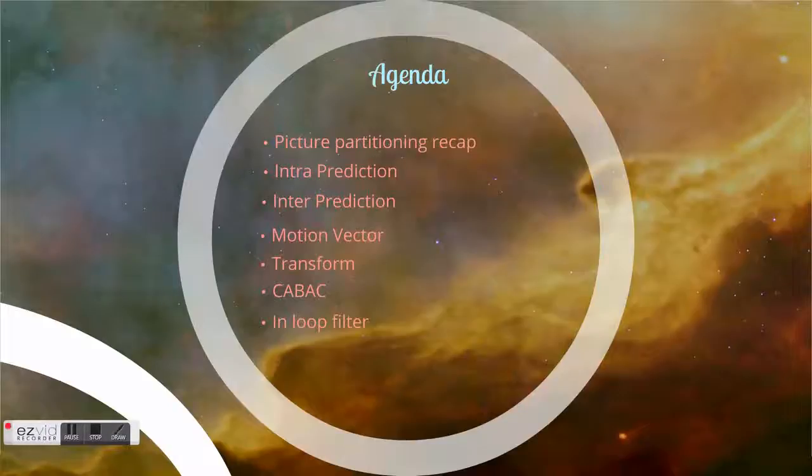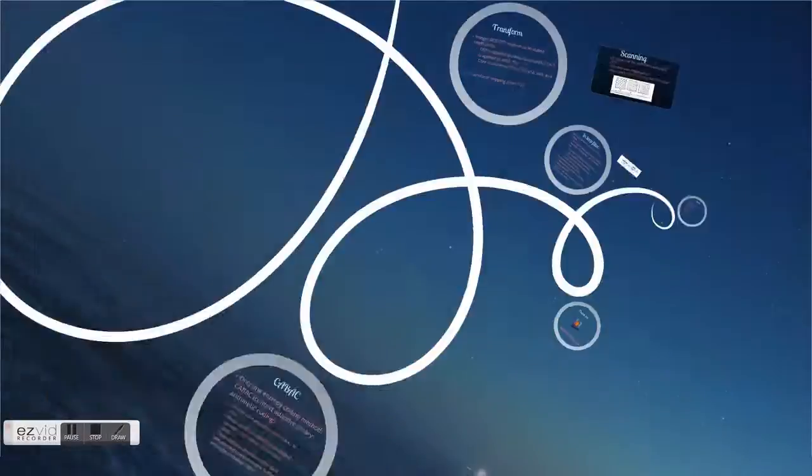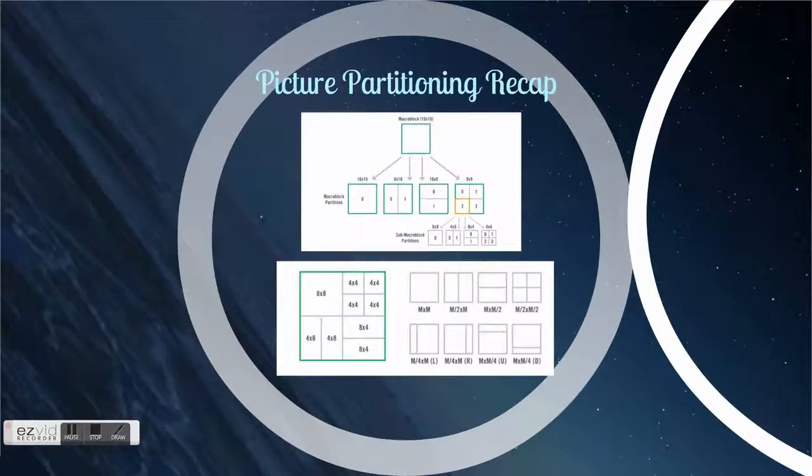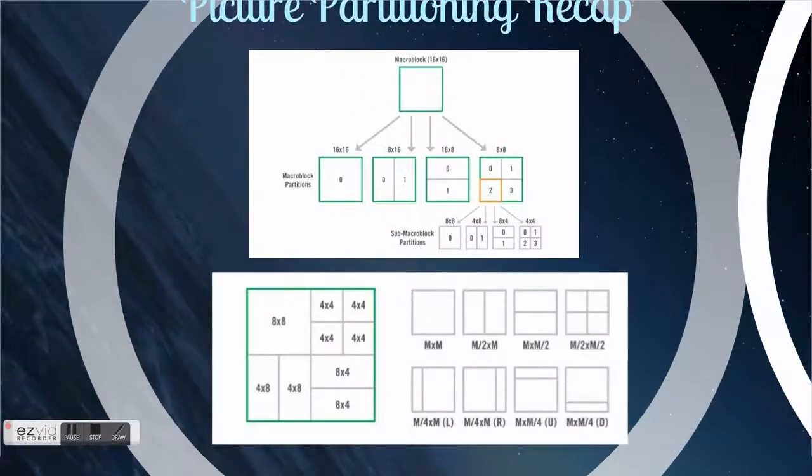Let's start from picture partitioning, from what we talked last time. By comparing to H.264, on the top side you can see H.264 partitioning. Its maximum macroblock is 16 by 16, which is subdivided to smaller parts, and this can be subdivided to even smaller parts than this.